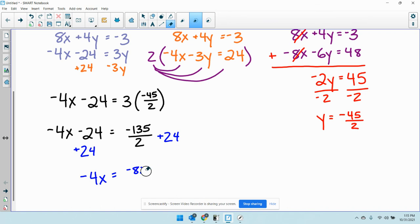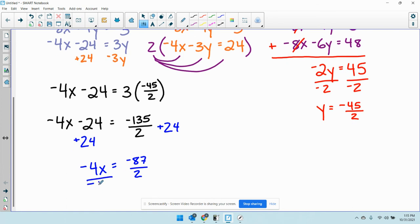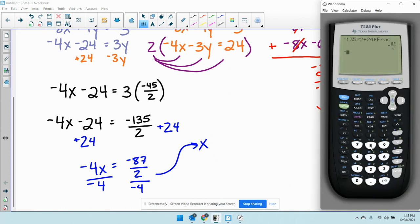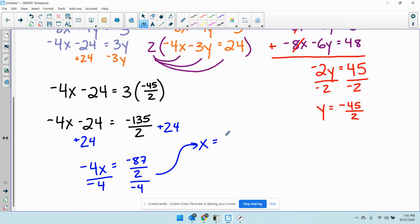Negative 87 over 2. And then lastly, divide both sides by negative 4. We get x equals. We will do negative 87 divided by 2 divided by negative 4. You get this. We want a fraction. We hit math. Enter. Enter. We get 87 over 8.